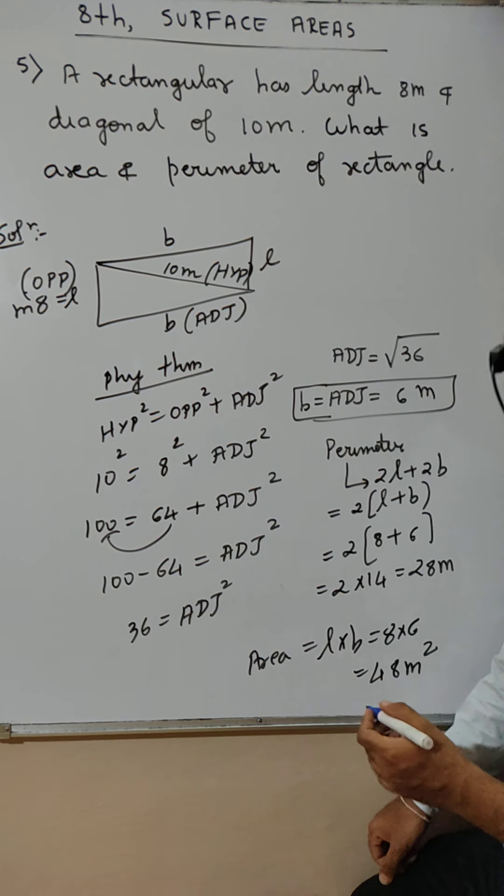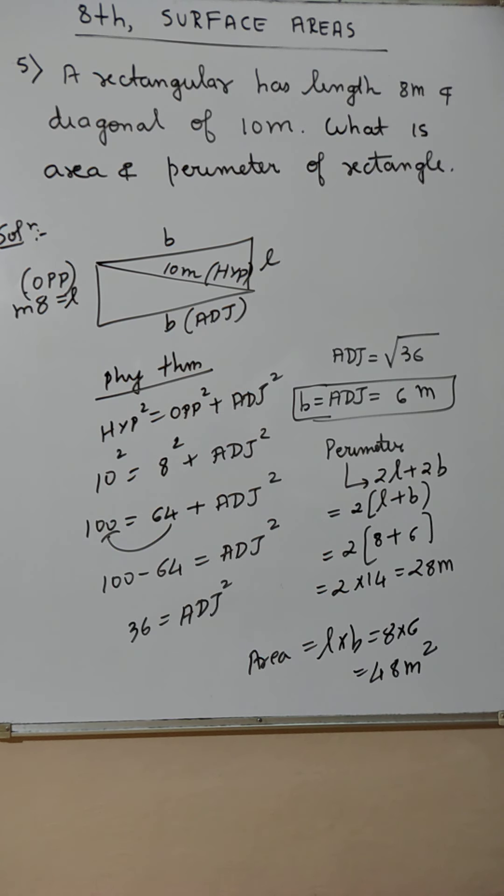48 meter square. Area toh di hai. Area toh di hai, karo ke 48 meter square. Correct? Meter square nahi likhye ga toh marks karay ga. Correct. Correct. All right.